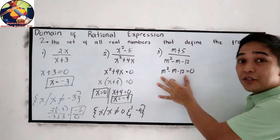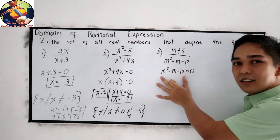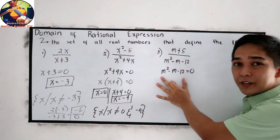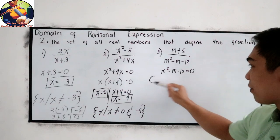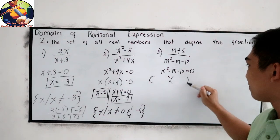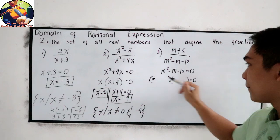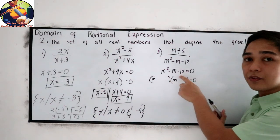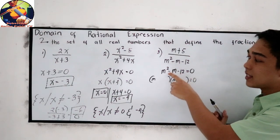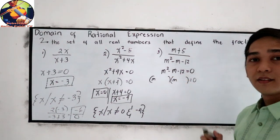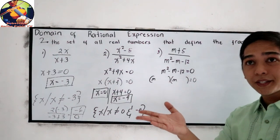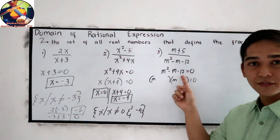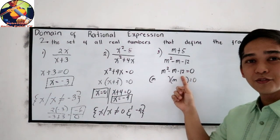This is a general trinomial. To solve for m, let us find the factors first. So our factors are m, m. Factors of negative 12 that the sum is negative 1, so 4 times 3. Now, focus on the sign. One negative and one positive.